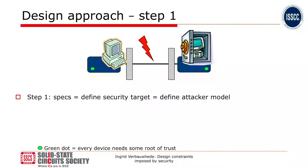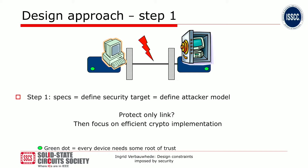How do we approach this? The first step, as in any design, is to look at the specs. We want to define our security target, and we call that the attacker model. In this case, a PC well protected behind an office wants to talk to servers. What you want to protect here is actually the link — we protect only the link — and we're probably going to focus on just very efficient crypto implementations to protect that link.